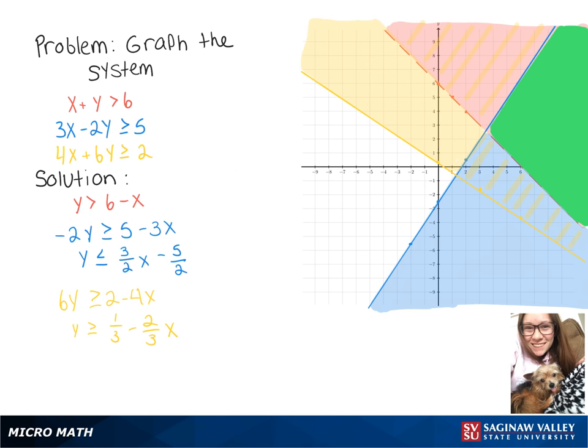So everything you see there in that green section is where all of our shaded regions intersect. So any number that's in that region would be a solution to this system.